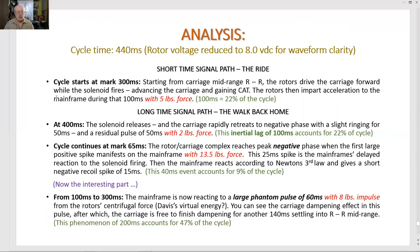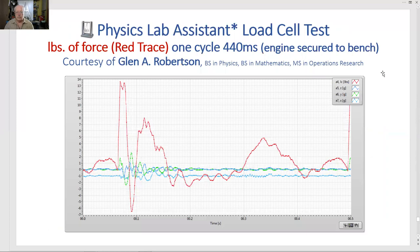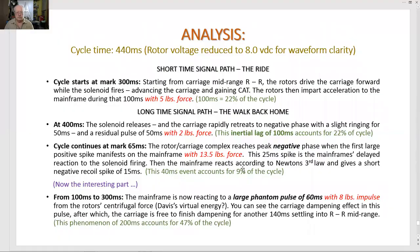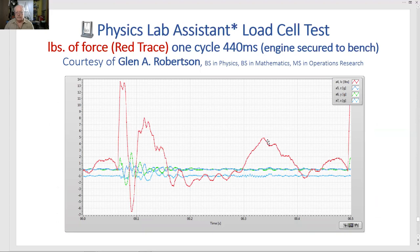Okay. Short time signal path. The ride. Cycle starts at mark 300. Actually, the cycle starts here. Starting from carriage midrange, R to R, the rotors drive the carriage forward while the solenoid fires, advancing the carriage and gaining CAT. The rotors then impart acceleration to the mainframe during that 100 milliseconds with five pounds force, which is about 22% of the cycle. So here, the solenoid is activated. Close the carriage forward while the rotors are also going in the same direction. There's five pounds of force.